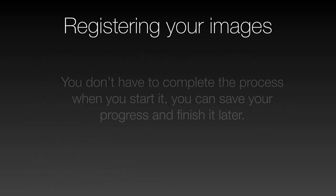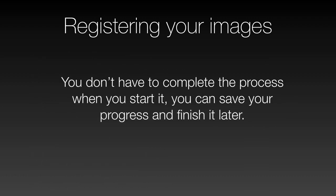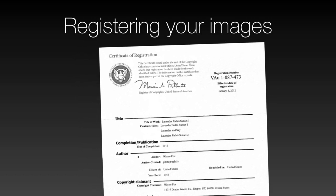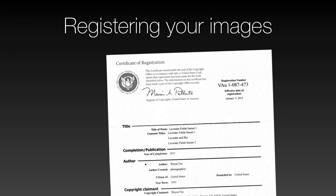One thing to keep in mind is that you don't have to complete the process when you start it. If you're uncomfortable with anything, you can stop and pause. If you think you've made a mistake, you can delete it. Until you pay the $55, there's nothing set — it's just a working case. Once you've paid the money and uploaded the files, somewhere between three and seven months later you should get notification from the copyright office that that group of images is now registered.